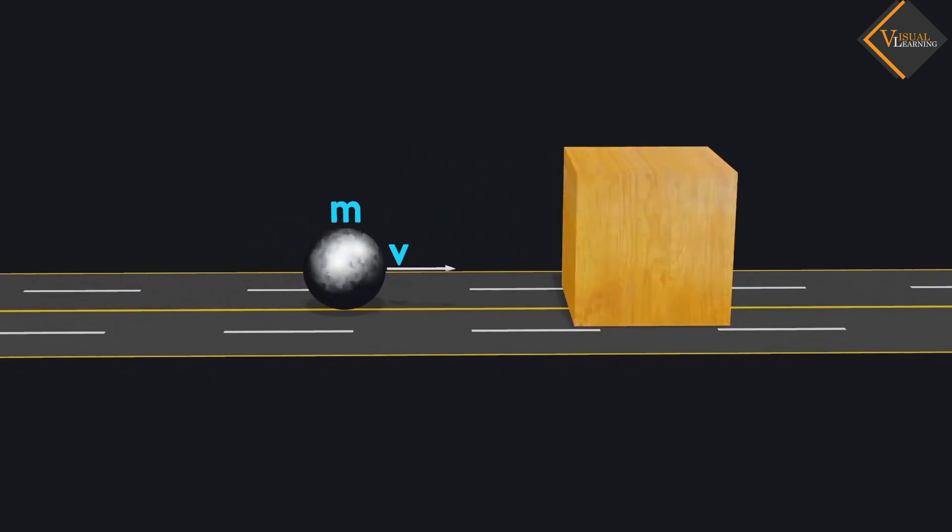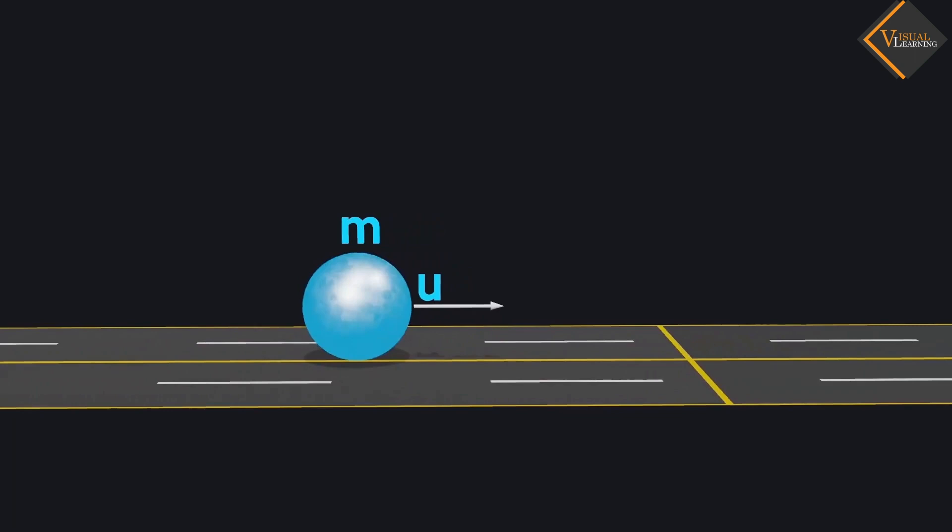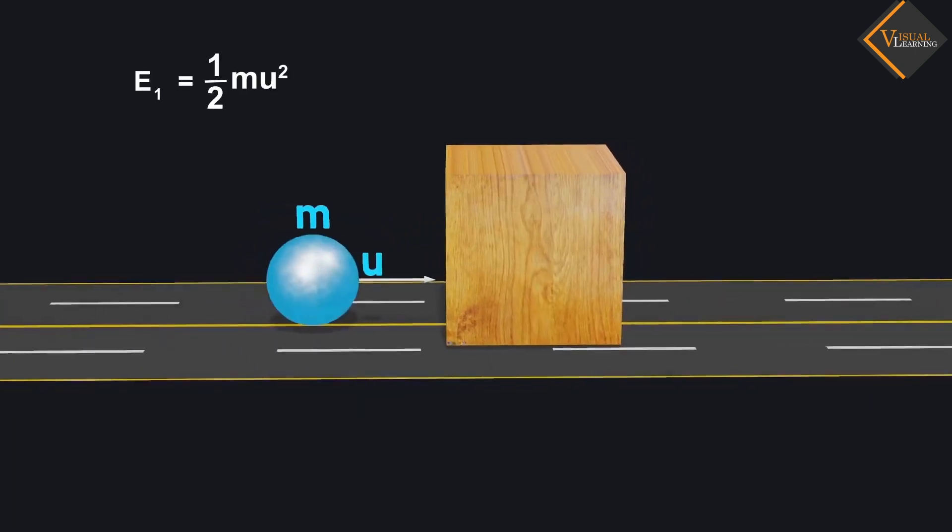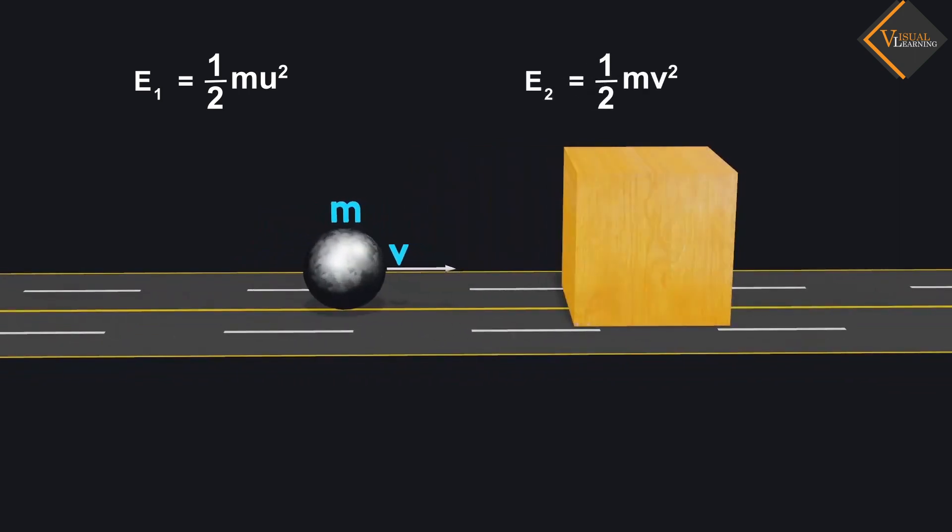Now, by the expression of kinetic energy, the kinetic energy possessed by the ball in the beginning and the kinetic energy possessed by the ball after hitting the wooden block - the difference of these kinetic energies is equal to the work done.